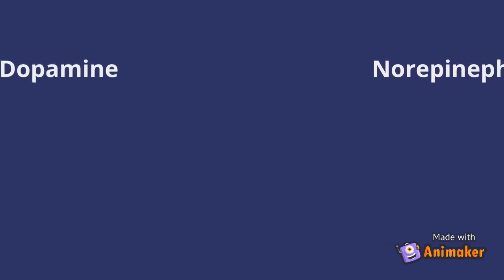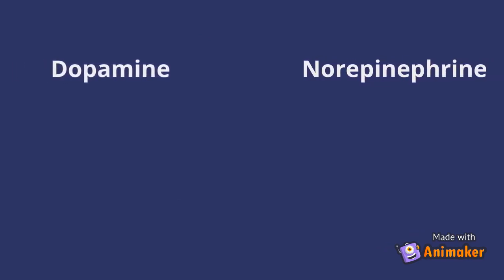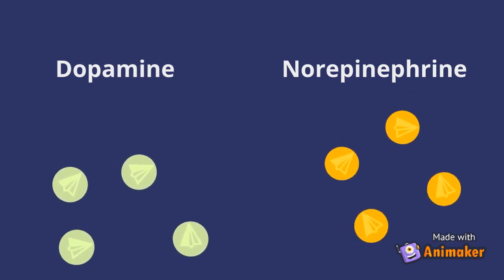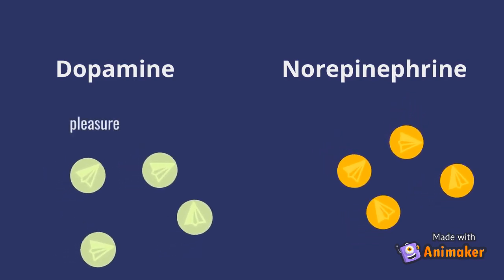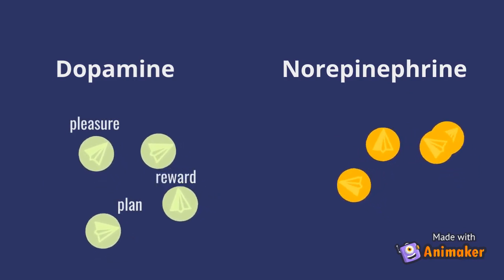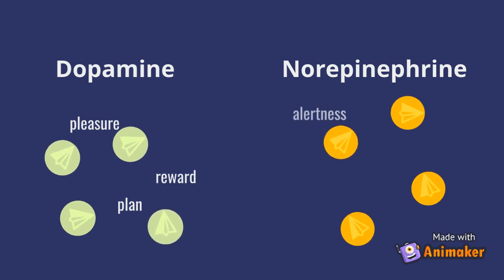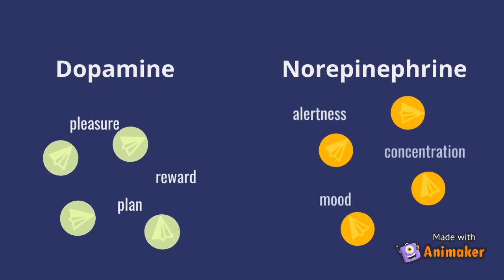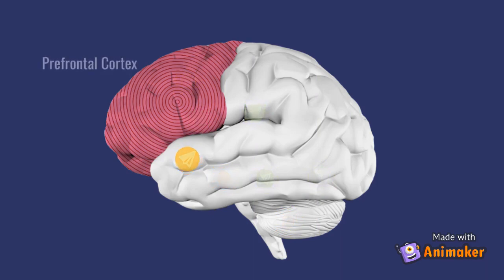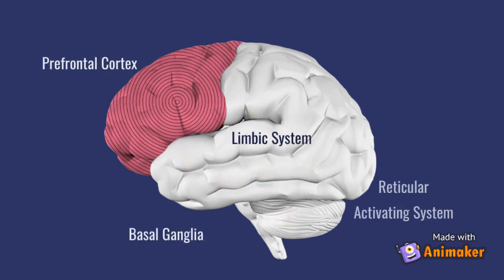In ADHD, there are lower than normal levels of two types of neurotransmitters called dopamine and norepinephrine in the brain. Dopamine plays a role in how we feel pleasure. It's a big part of our ability to think and plan — it helps us strive, focus, and find things interesting. Norepinephrine is involved in alertness and arousal, along with mood and ability to concentrate. The deficiency in these neurotransmitters is found in four key regions of the brain: the frontal cortex, the limbic system, the basal ganglia, and the reticular activating system.